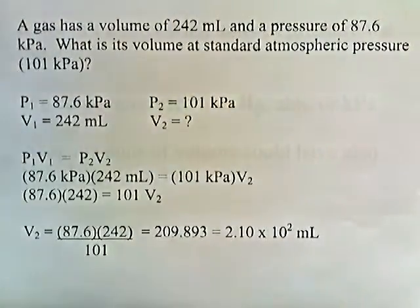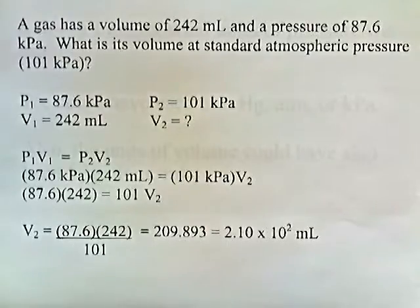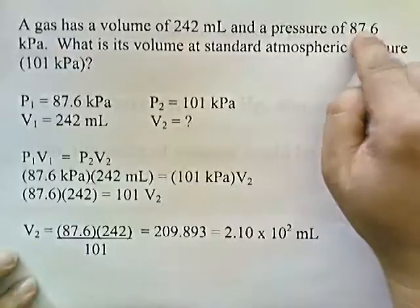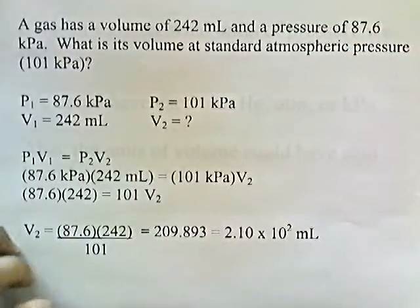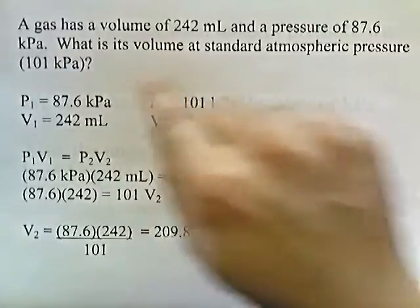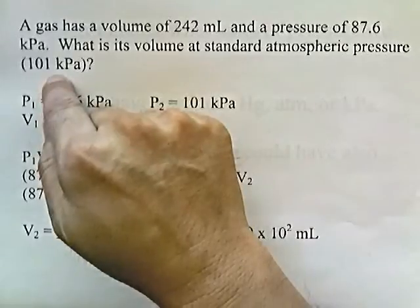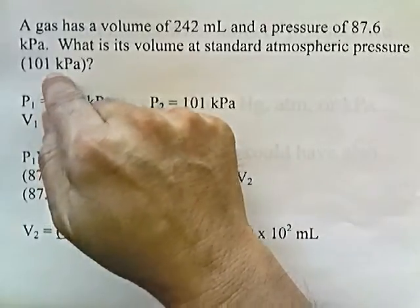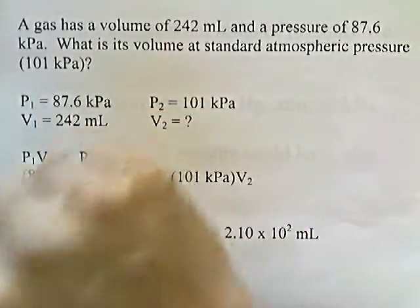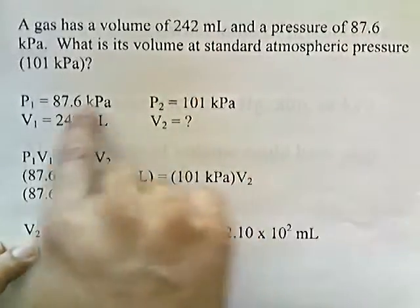Let's try a problem. A gas has a volume of 242 milliliters and a pressure of 87.6 kilopascals. What is its volume at standard atmospheric pressure, 101 kilopascals? We're saying that 101 kilopascals is going to be the new pressure inside the balloon, and we want to know what happens to the volume. The initial pressure, 87.6, is P1.